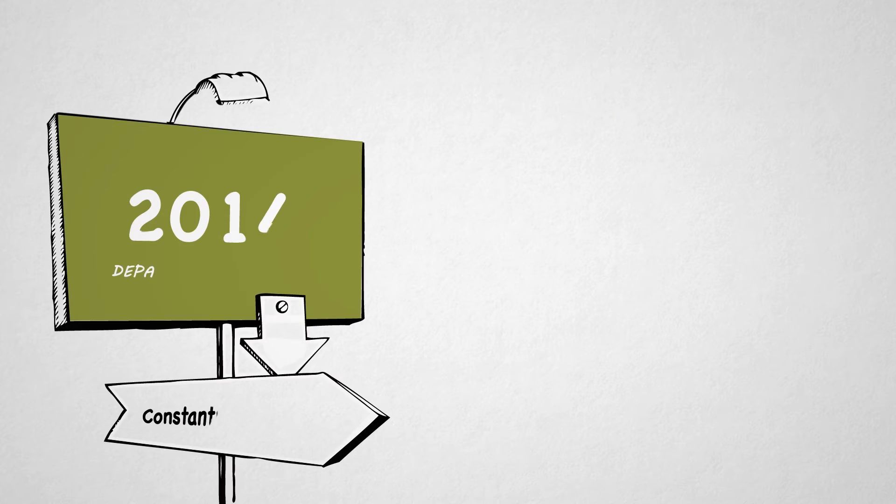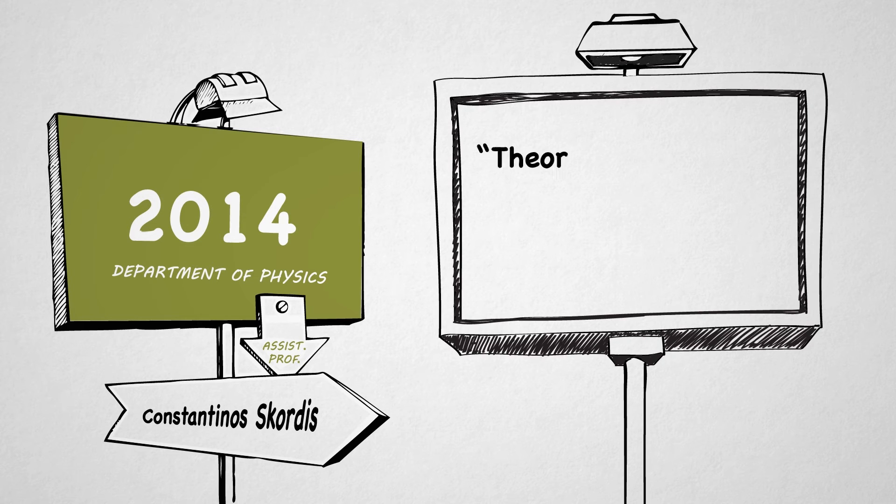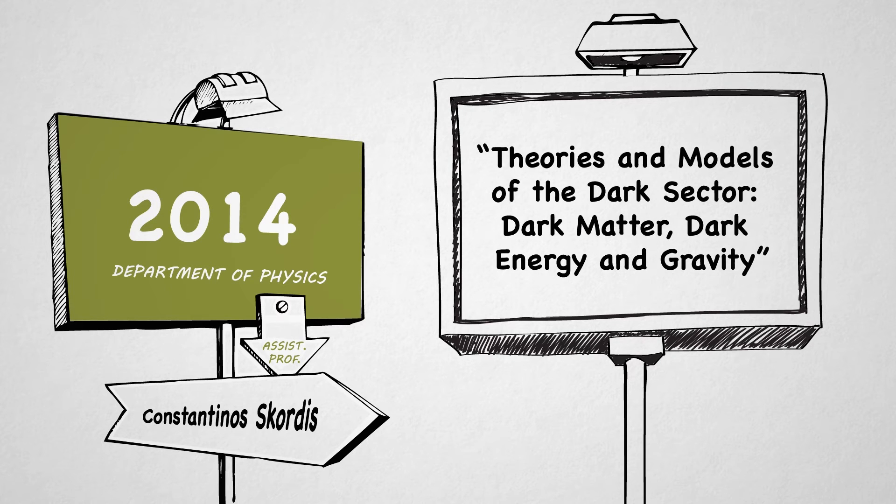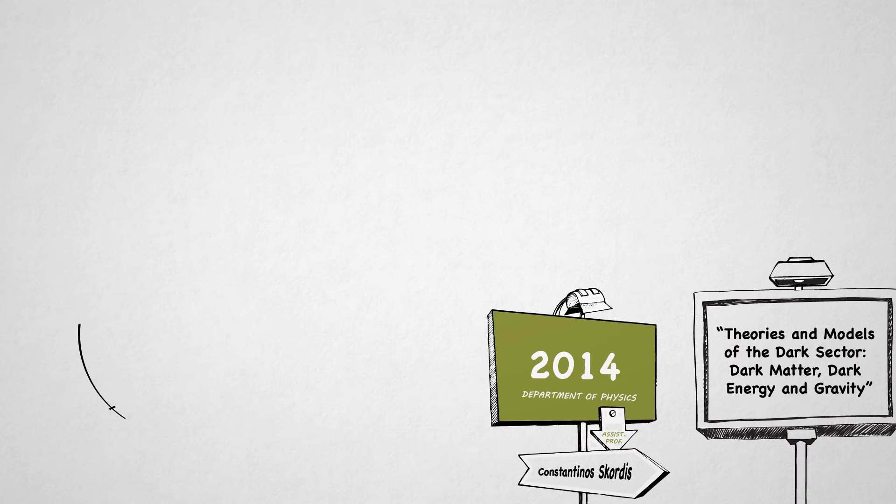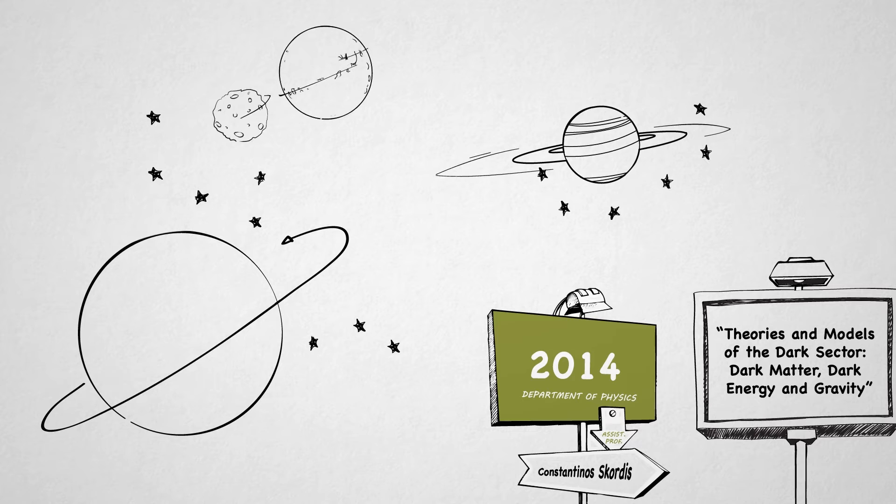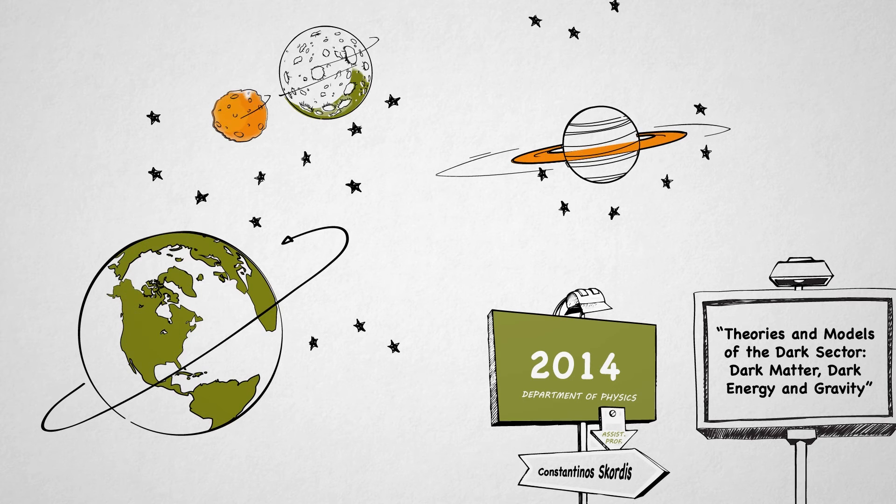In 2014, Assistant Professor Constantinos Skordis was awarded an ERC Consolidator Grant of 1.2 million euros in order to test theoretical models of gravity with observations of the universe and in doing so, reach a more accurate understanding of the workings of gravity and the role of the dark sector in cosmology.